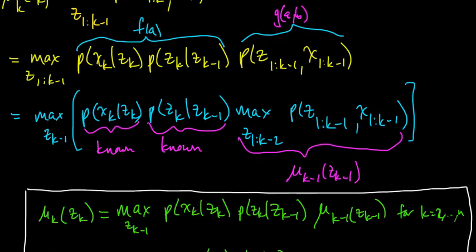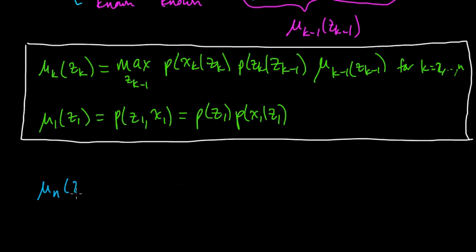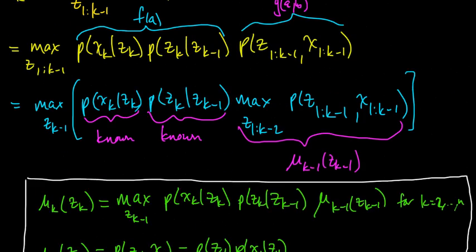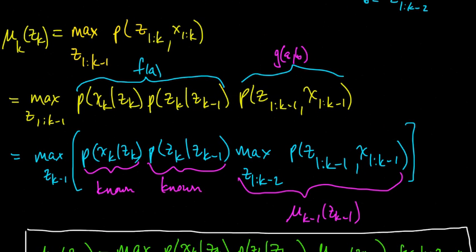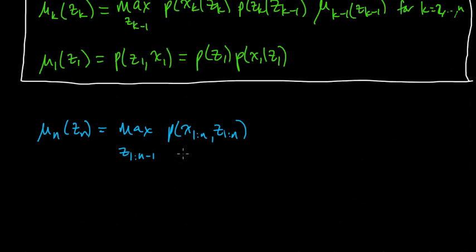Once we have mu_n, let's figure out what it gives us. Mu_n of z_n is the max over z from 1 to n-1 of the probability of the whole thing — x from 1 to n and z from 1 to n. In order to get the maximizer over the whole thing, we just take one more max over z_n, and that gives us the total maximum value.